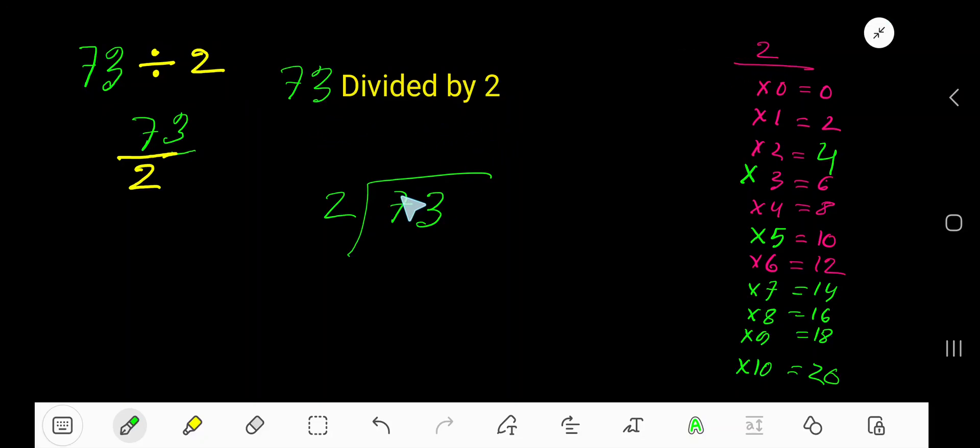73 divided by 2. Since 2 is a divisor and 73 is a dividend, we need the multiplication table of 2: 2 times 0 is 0, 2 times 1 is 2, 2 times 2 is 4, 2 times 3 is 6.